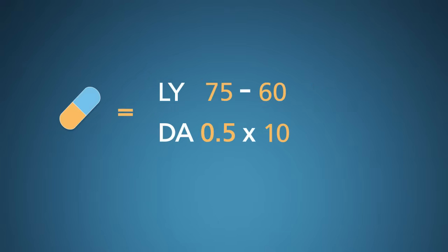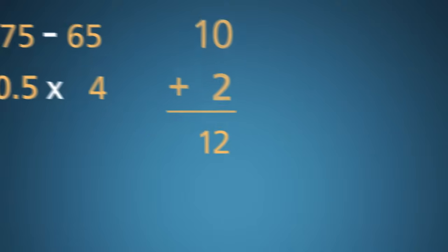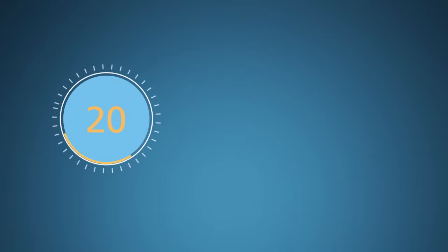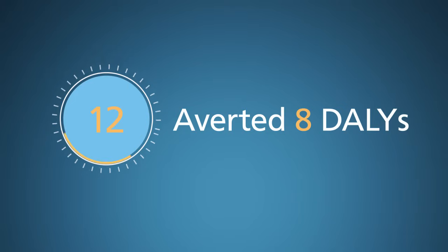What if a diabetes care intervention extended life by 5 years and reduced the duration of disability from 10 years to 4? Then the LY — the life years lost — would be 10 instead of 15. The DA — the disability adjustment — would be 2 instead of 5. Added up, that yields 12 DALYs instead of 20. This means we've averted 8 DALYs through this intervention — that is the health benefit of the intervention.